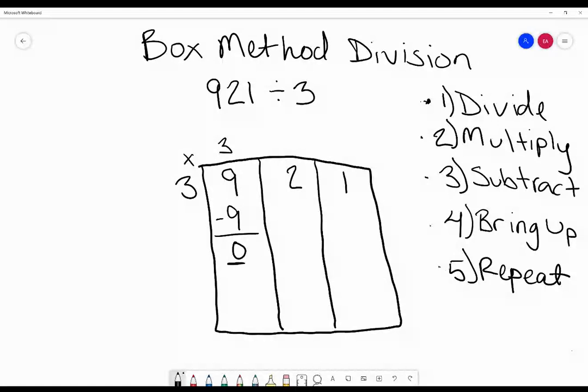Again, we're going to divide 2 divided by 3 which is 0. We'll multiply 0 times 3 which gives us 0.